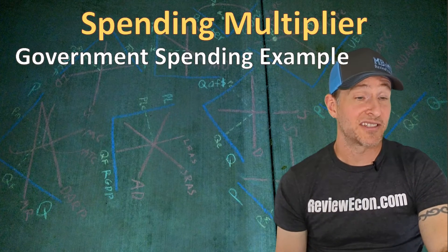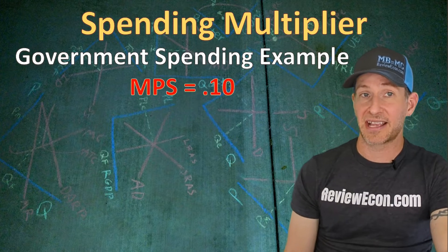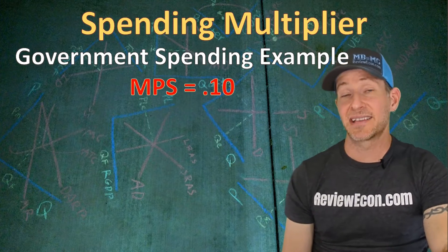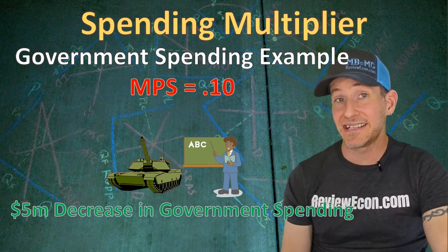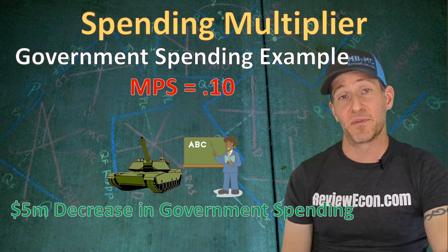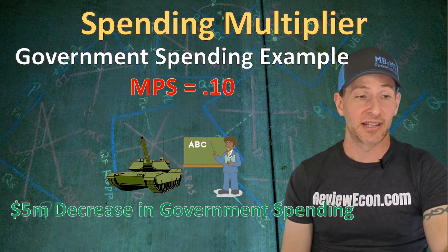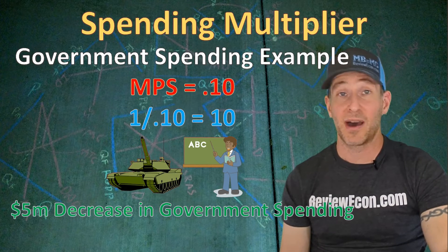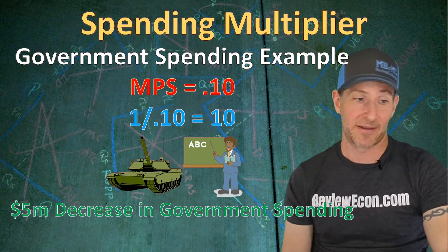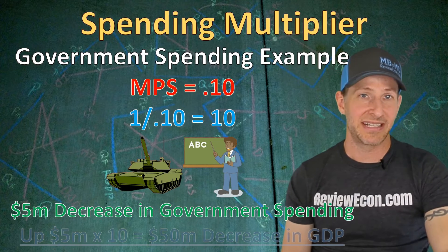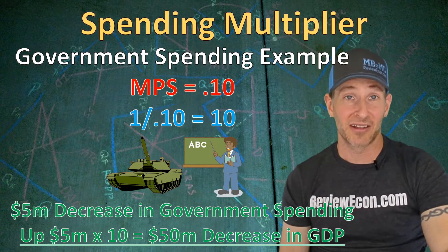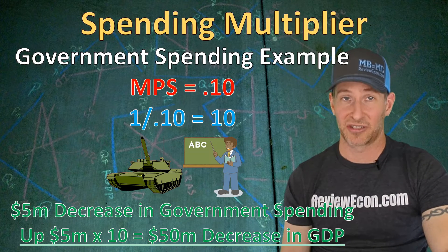If we had a change in government spending when the marginal propensity to save is 0.1, and this time instead of an increase in spending, let's say there's a $5 million decrease in government spending — the multiplier works the same way even with a decrease. Calculating the multiplier: 1 divided by 0.1 equals a spending multiplier of 10. Multiplying that by the $5 million decrease in government spending gives us a maximum $50 million decrease in overall national income.